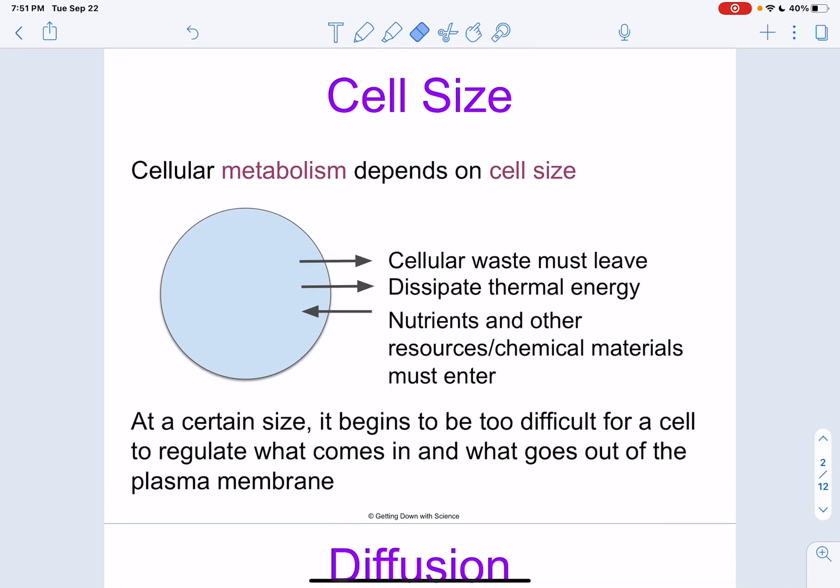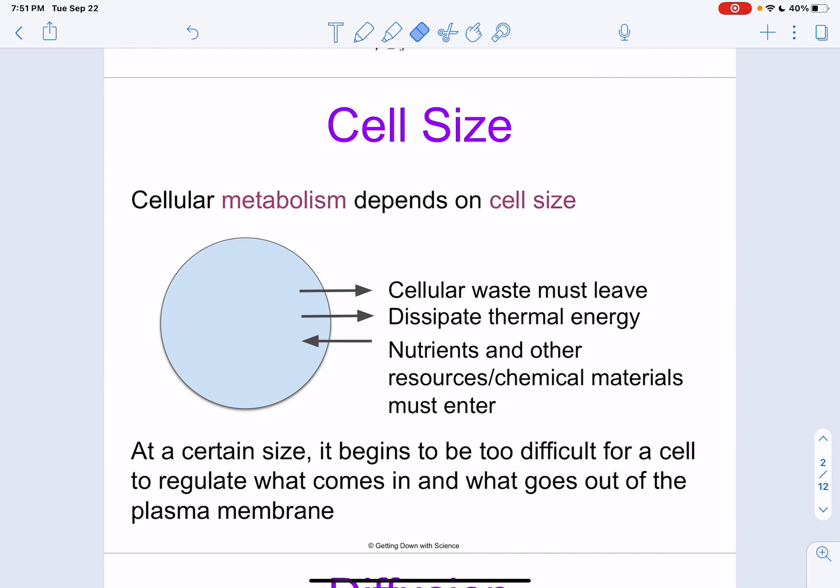Cell size. The cellular metabolism depends on cell size, how many reactions happen in the cell. This could include how much cellular waste must leave, energy that is released, or nutrients that are brought in. Eventually, the cell will get to a point where it gets really difficult to maintain these processes and regulate what's coming in and out of the plasma membrane. So it's actually a lot more useful to be small than being a large cell.